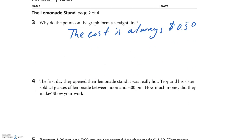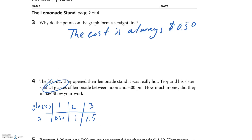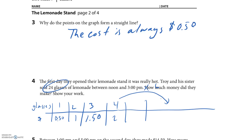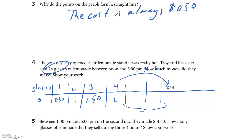The first day they opened their lemonade stand it was really hot. Troy and his sister sold 24 glasses of lemonade between noon and 3 p.m. How much money did they make? At 1 glass it's 50 cents, at 2 it's a dollar. We need to get up to 24. At 4 glasses it was $2 — what if I multiply 4 times 6 to get 24? So times 6 on both sides: 4 × 6 = 24 glasses, $2 × 6 = $12.